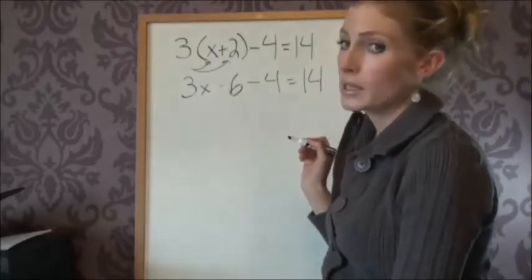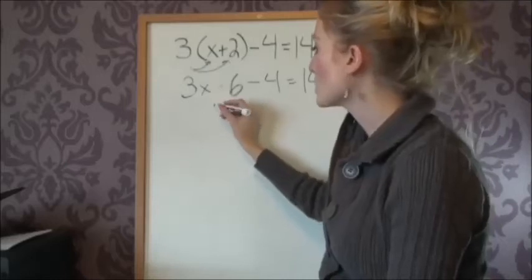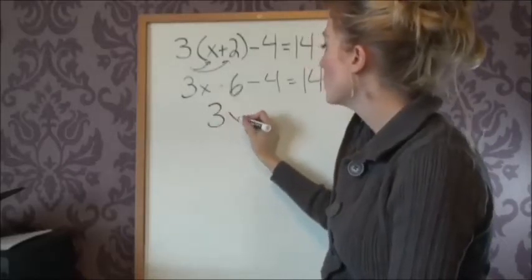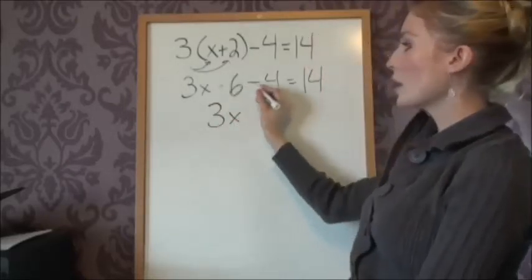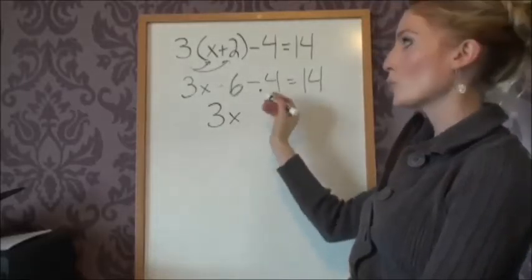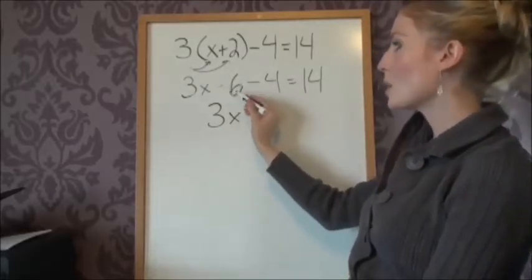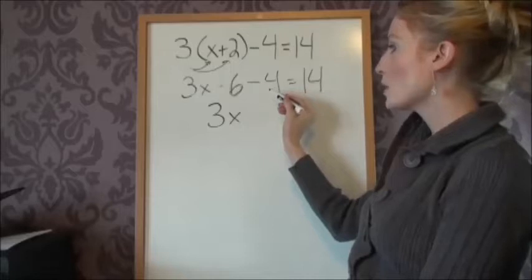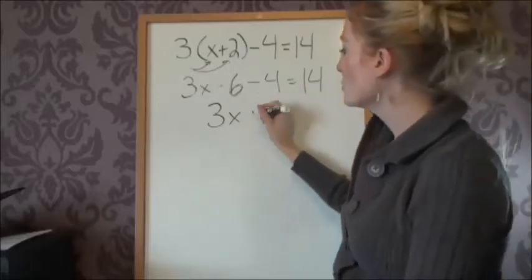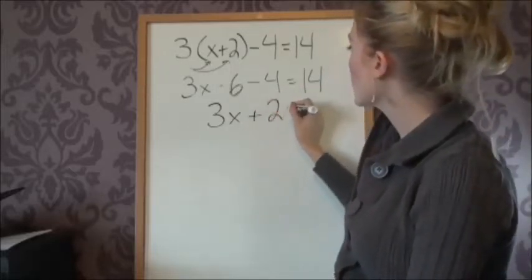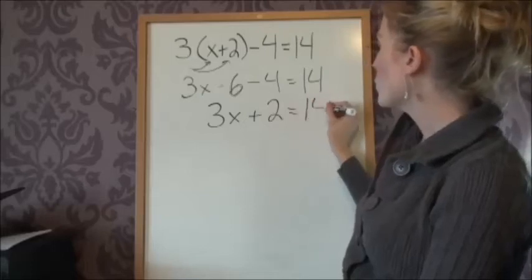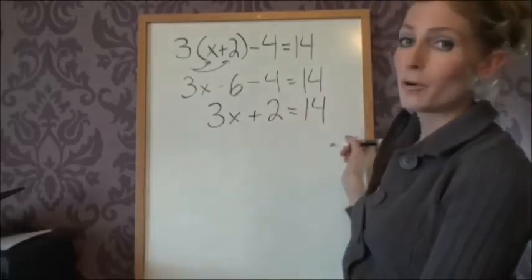We keep all the x's to the left-hand side, so we'll keep the 3x over here. And we want to simplify these numbers here because they're both constants. So obviously we can take positive 6 minus 4. That would give us plus 2. And we still have the 14 over here. We're not moving it because we want all the numbers to end up on that side.